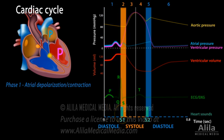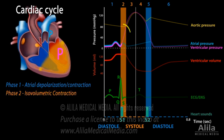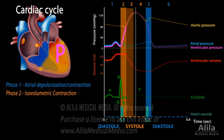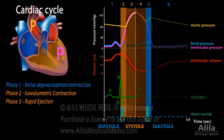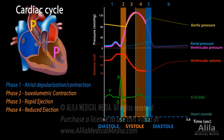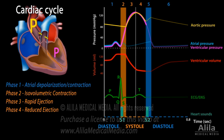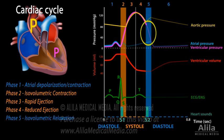The first part of systole, phase 2, is isovolumetric contraction because the ventricles start to contract, but semilunar valves remain closed and no blood is ejected. Phase 3, rapid ejection, starts when ventricular pressures exceed the pressures within the aorta and pulmonary artery, pushing semilunar valves to open. Phase 4 includes ventricular repolarization and reduced ejection. Closure of semilunar valves produces the second heart sound, S2, and marks the beginning of diastole. The first part of diastole, phase 5, is again isovolumetric as the ventricles relax with all valves closed.